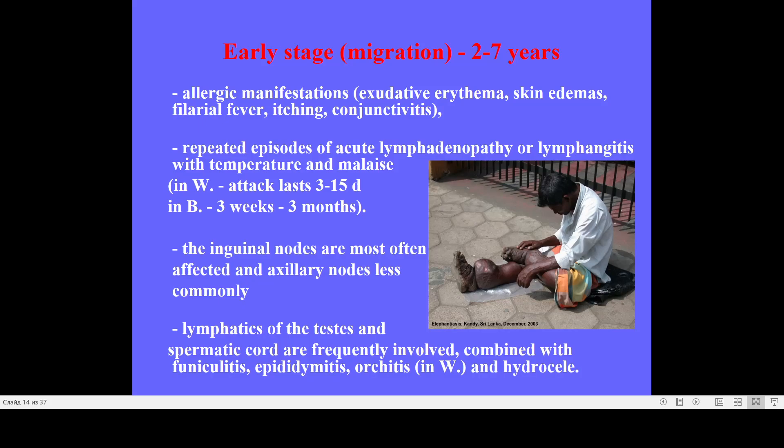Allergic dermatitis may be associated with itching; conjunctivitis may develop. First of all, the allergic syndrome may include repeated cases of acute lymphadenopathy and lymphangitis with increased body temperature, weakness, and malaise. These attacks last from several days to three months — in Wuchereriasis from three to fifteen days, and in Brugiasis from three weeks to three months.